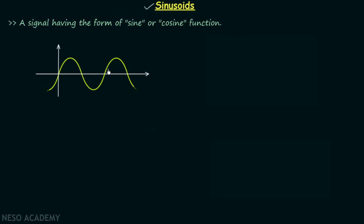Let us say that the sine function is representing an alternating voltage V(t), where t inside the bracket tells us that t is the independent variable. V(t) is equal to Vm·sine(ωt), where Vm is the maximum value of the voltage or amplitude. Sine indicates the nature of the waveform, ω is the angular frequency, and t is the time which is the x-axis in our plot.